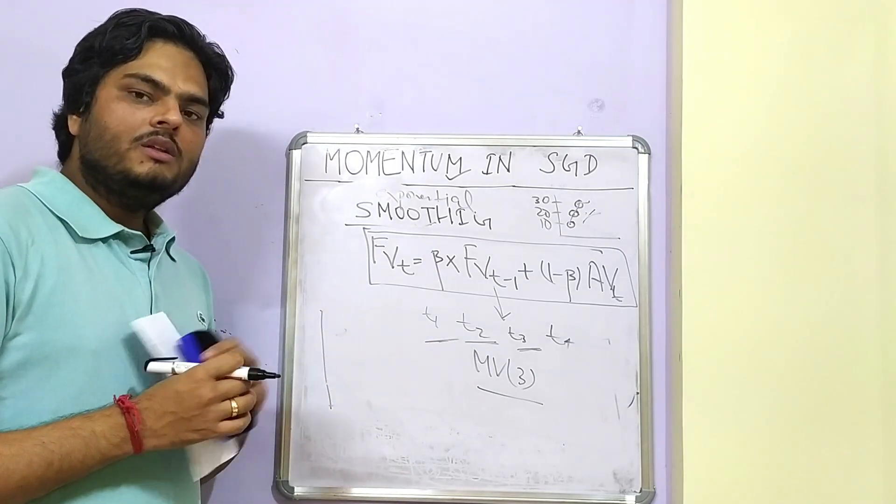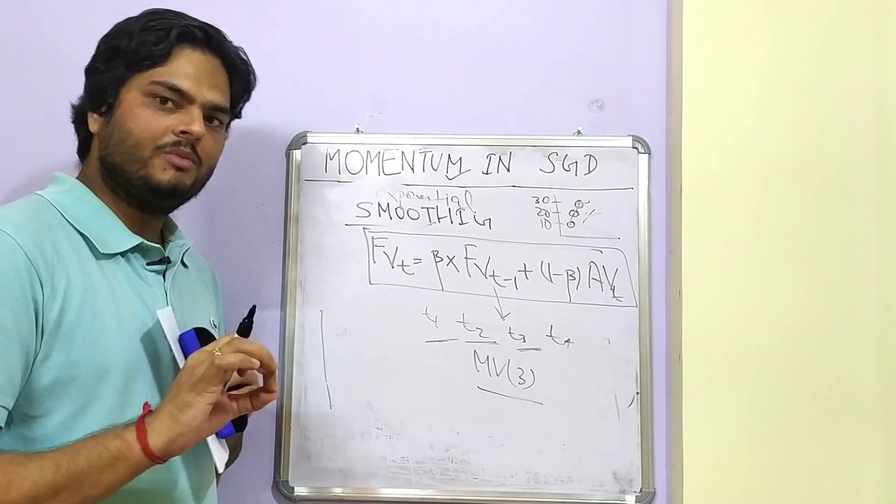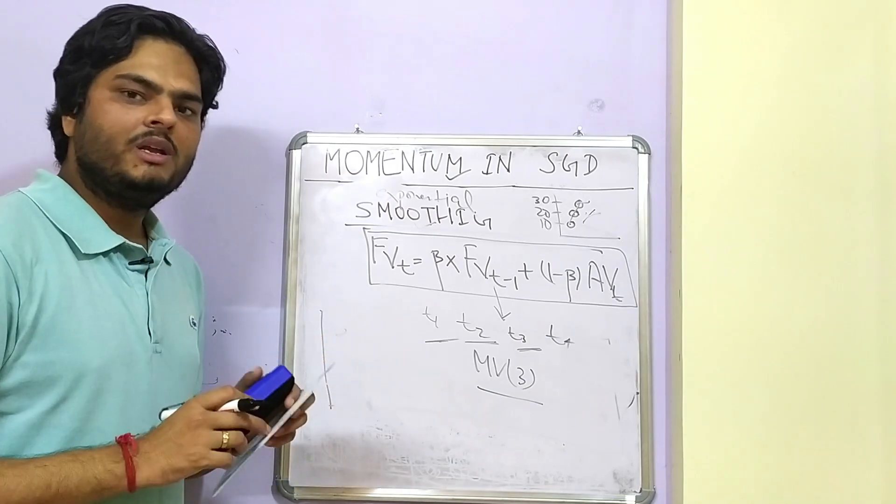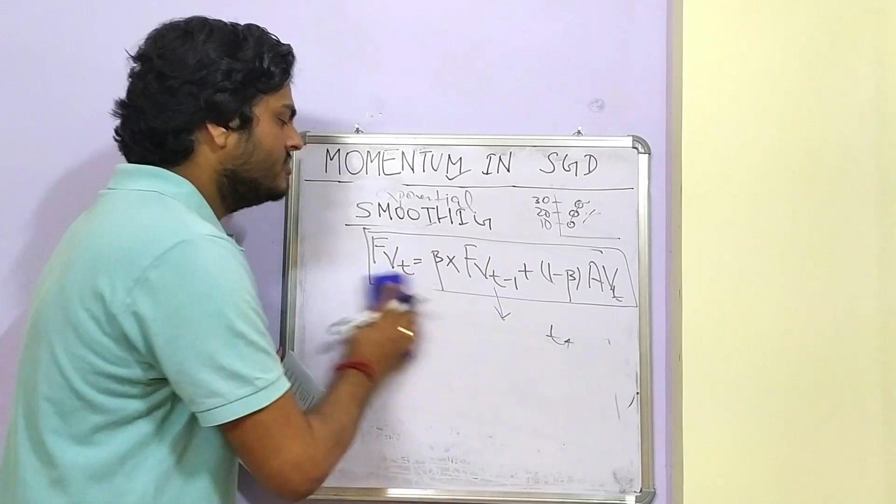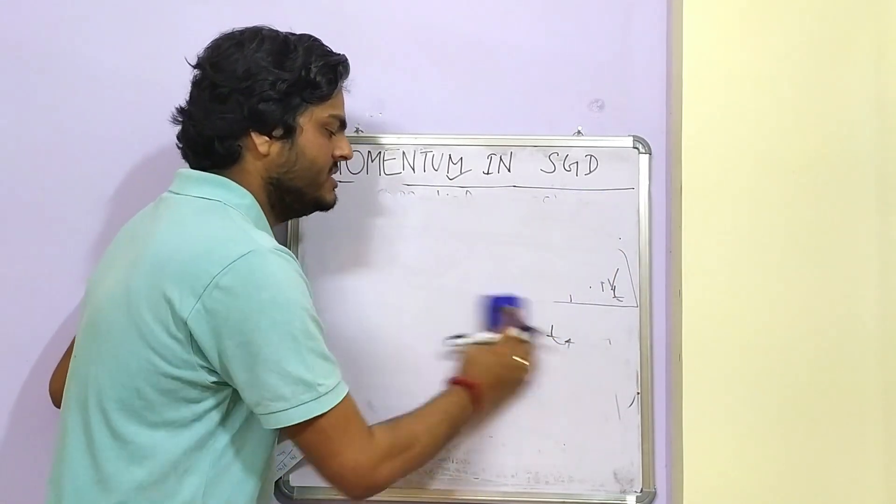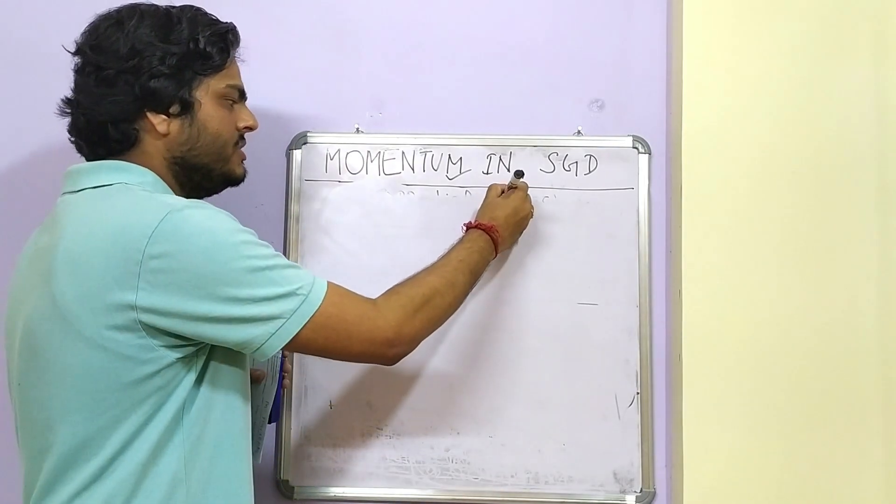Having said that, this is the basic of what we know as ARIMA model. I will explain ARIMA in my time series playlist. For now, this makes the base of momentum in stochastic gradient descent.